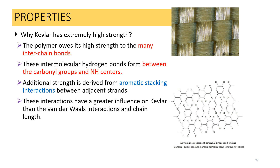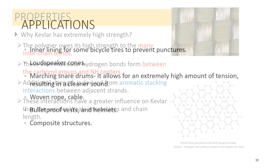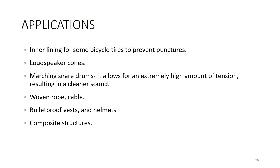The properties of Kevlar include very high tensile strength of about 3,620 MPa, lightweight, highly heat resistant, and good flame resistance. It is used mainly in bulletproof vests, composites for boat construction, and lightweight skis and rackets. Kevlar has extremely high strength because the polymer owes its strength to many interchain hydrogen bonds formed between the carbonyl group and the NH center, with additional strength derived from aromatic stacking interactions between adjacent strands.